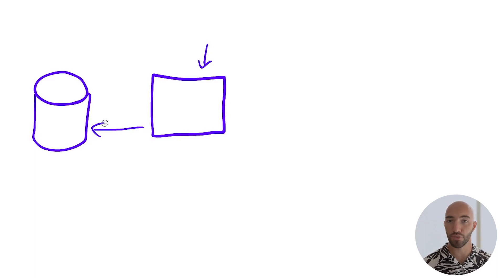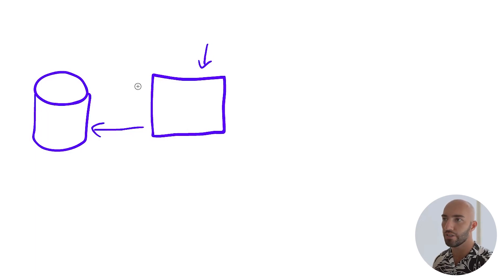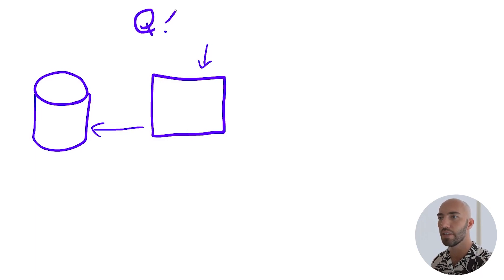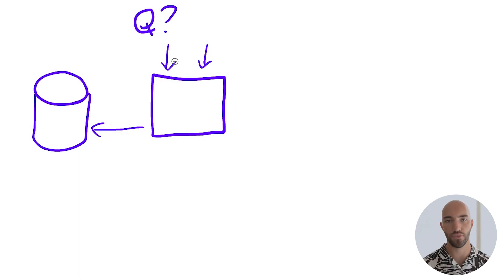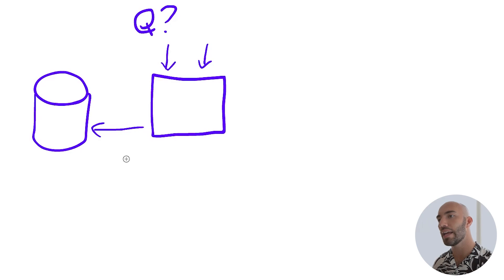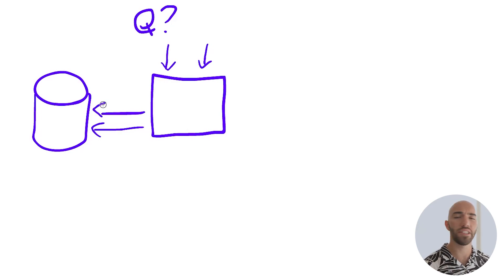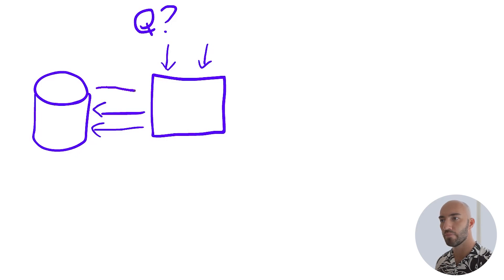We use this retriever again when we're asking questions. So we have a question — let's just call it Q — and that gets passed to our retriever model, converted into a vector, and then fed into the vector database. The vector database identifies the most similar context vectors and returns them to us through the retriever.